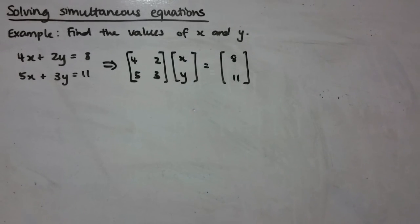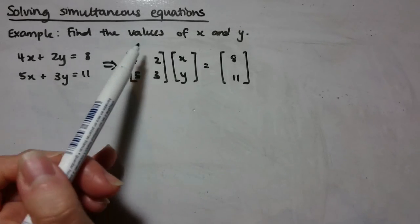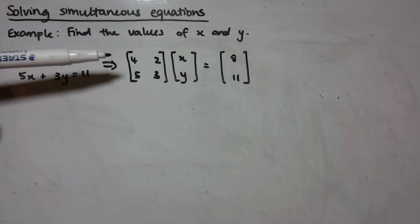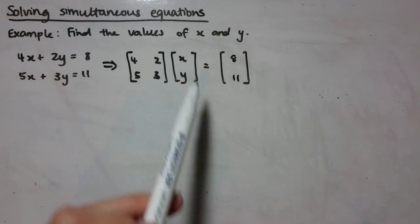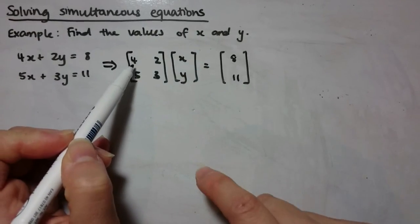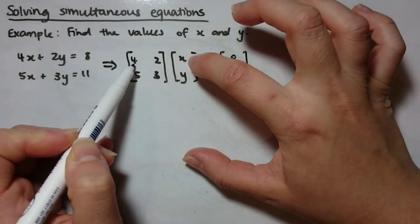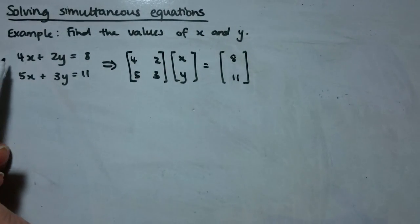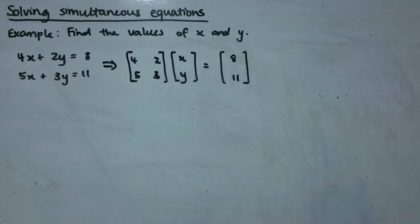And just by way of explanation, the reason these matrices are the way that they are is because when you expand these matrices out, when you multiply them, remember matrix multiplication is row by column, so you end up having for your first element 4 times x plus 2 times y, which is this left-hand side here. So that's why we set up the equations like this.